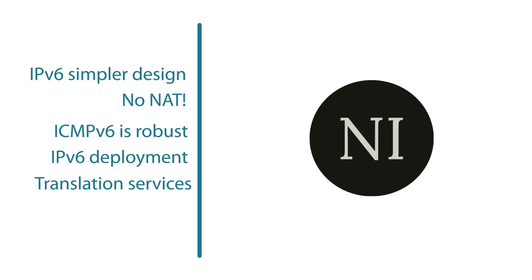Some of these enhancements to ICMPv6 are part of the ICMPv6 Neighbor Discovery Protocol. Deploying IPv6 is an extensive topic and can mean different things depending on your network. There are different types of translation techniques you may need to address, such as NAT64, server load balancing, proxy services, web cache control protocol, and network prefix translation.